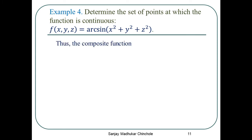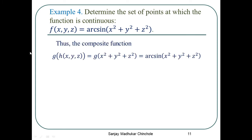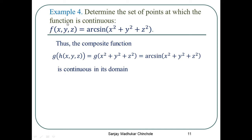So the composite function g(h(x,y,z)) where h(x,y,z) = x² + y² + z², gives g(x² + y² + z²) = arcsin(x² + y² + z²), which equals our given function f(x,y,z). Therefore, this function is also continuous in its domain.